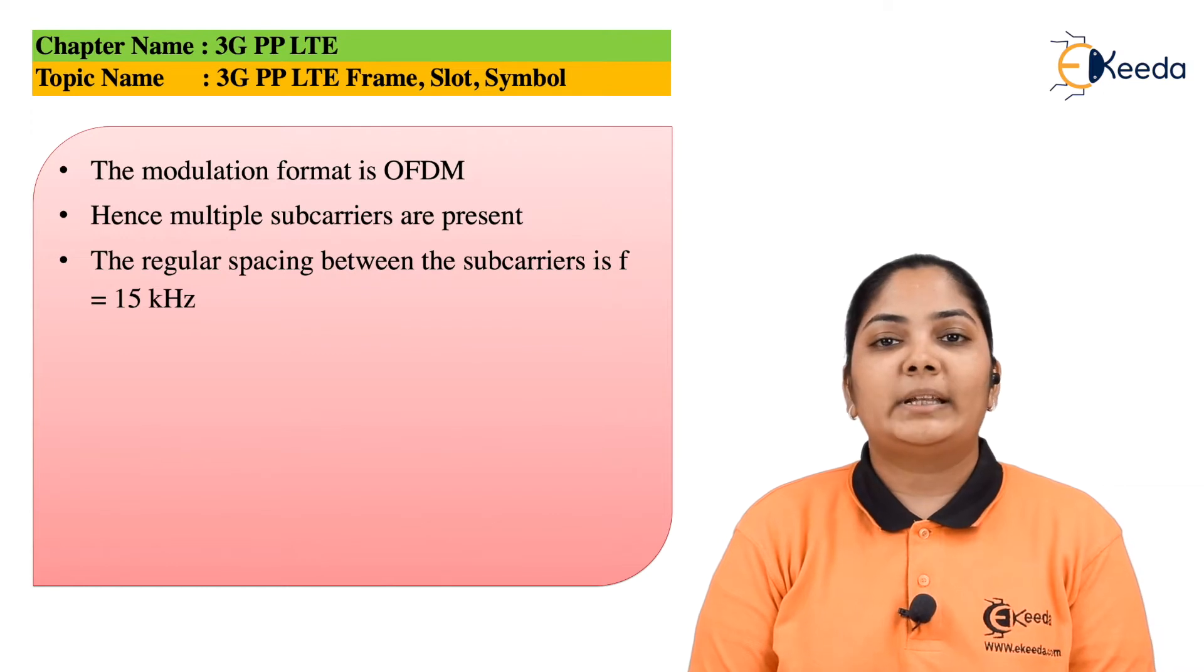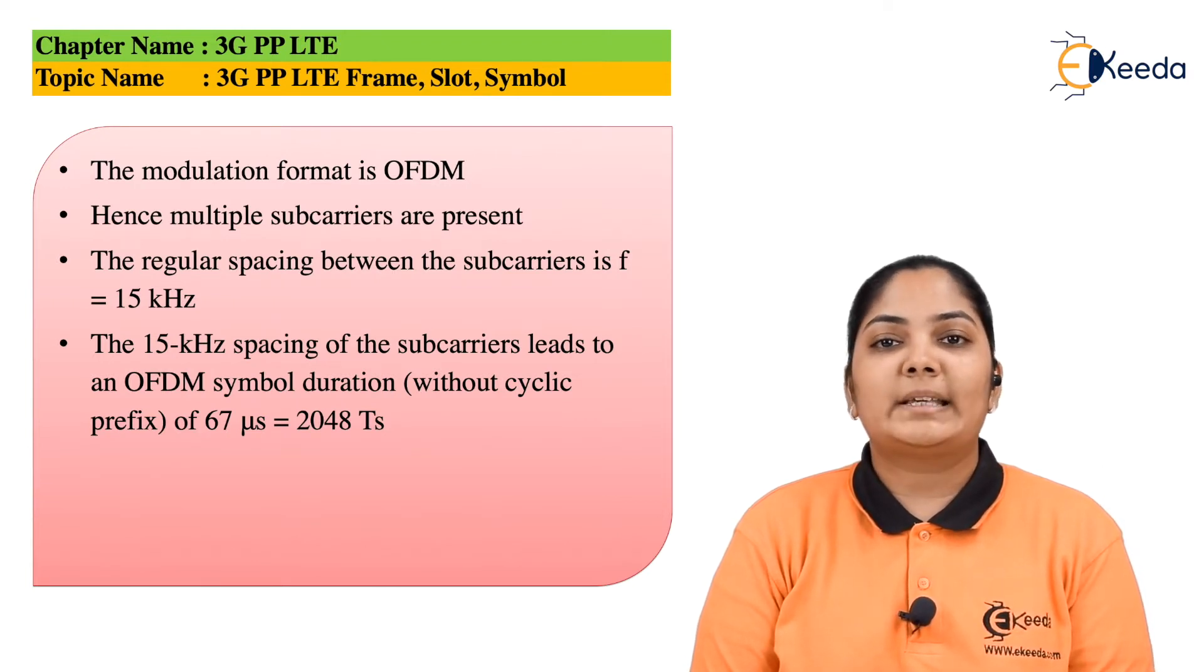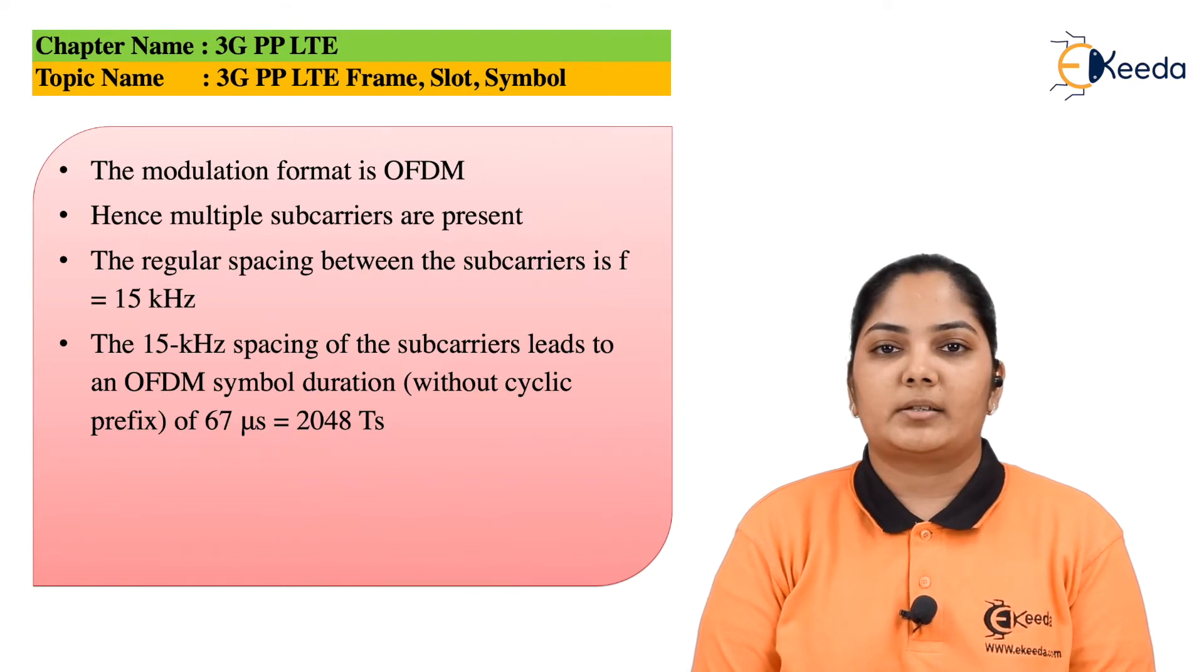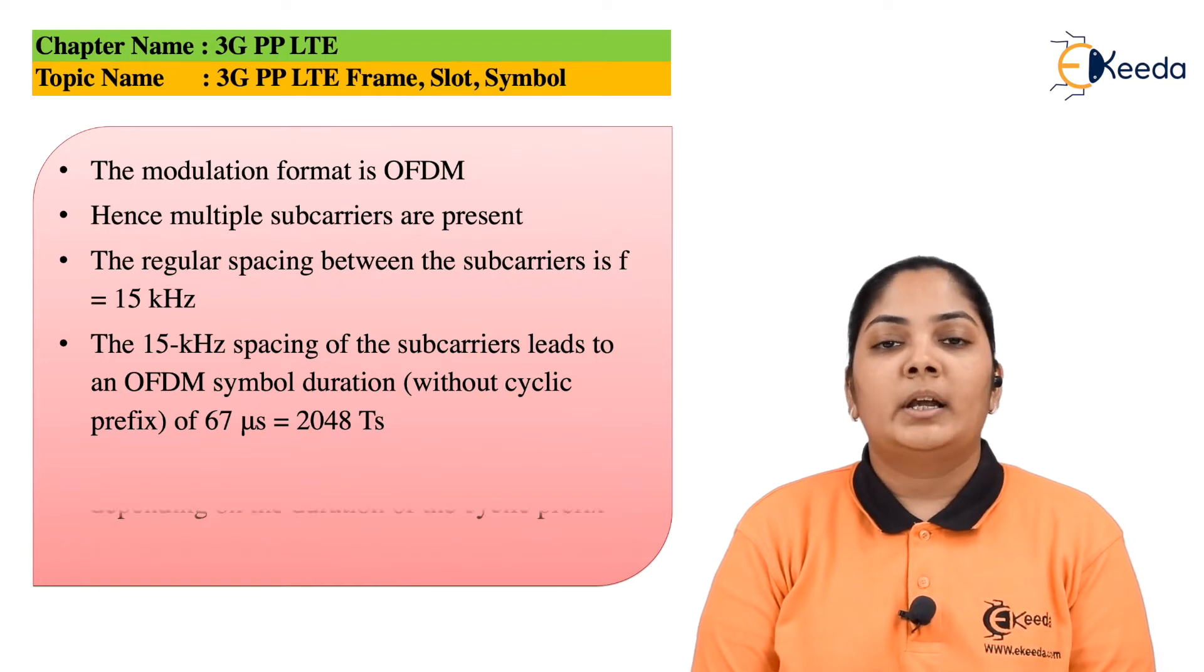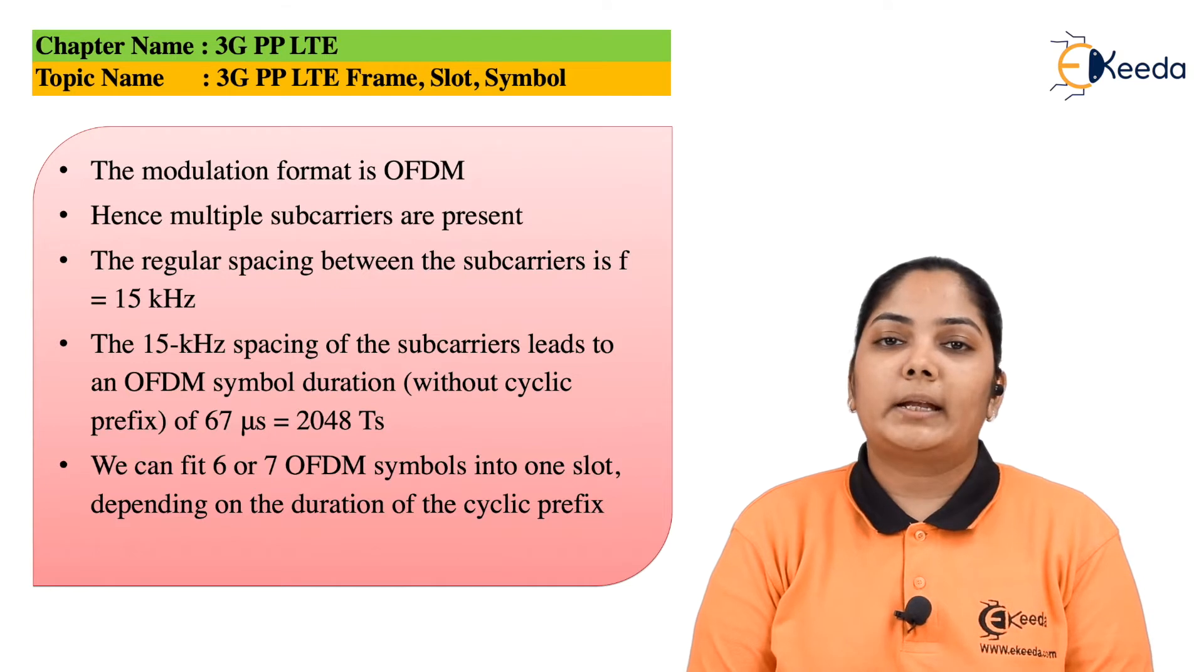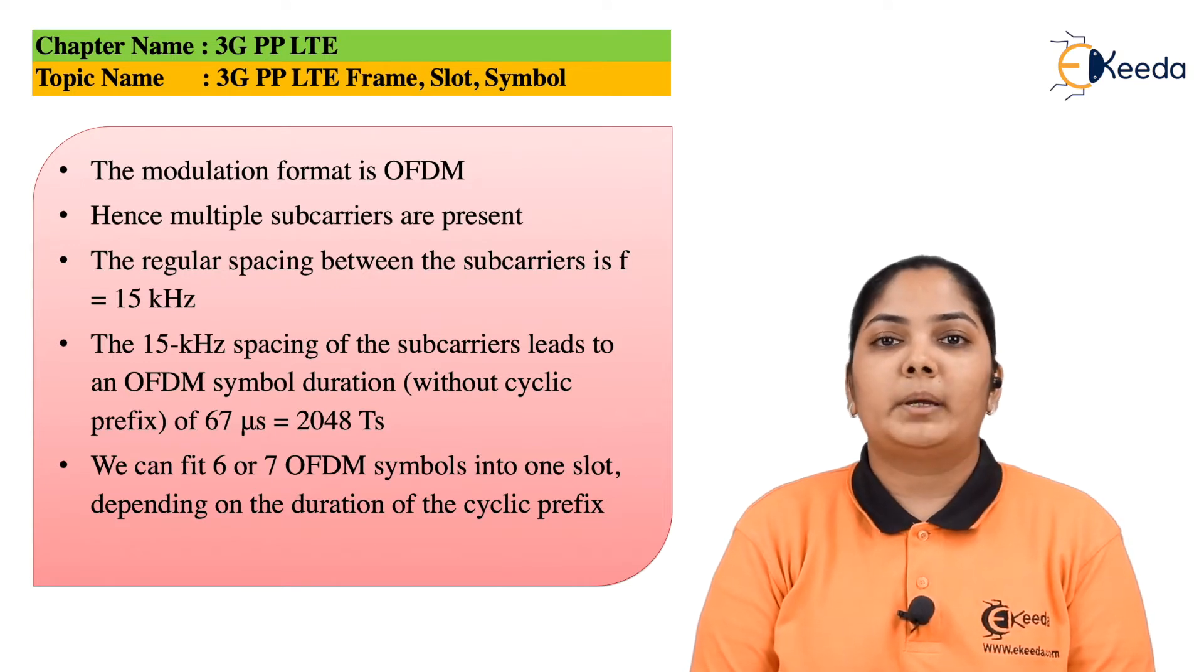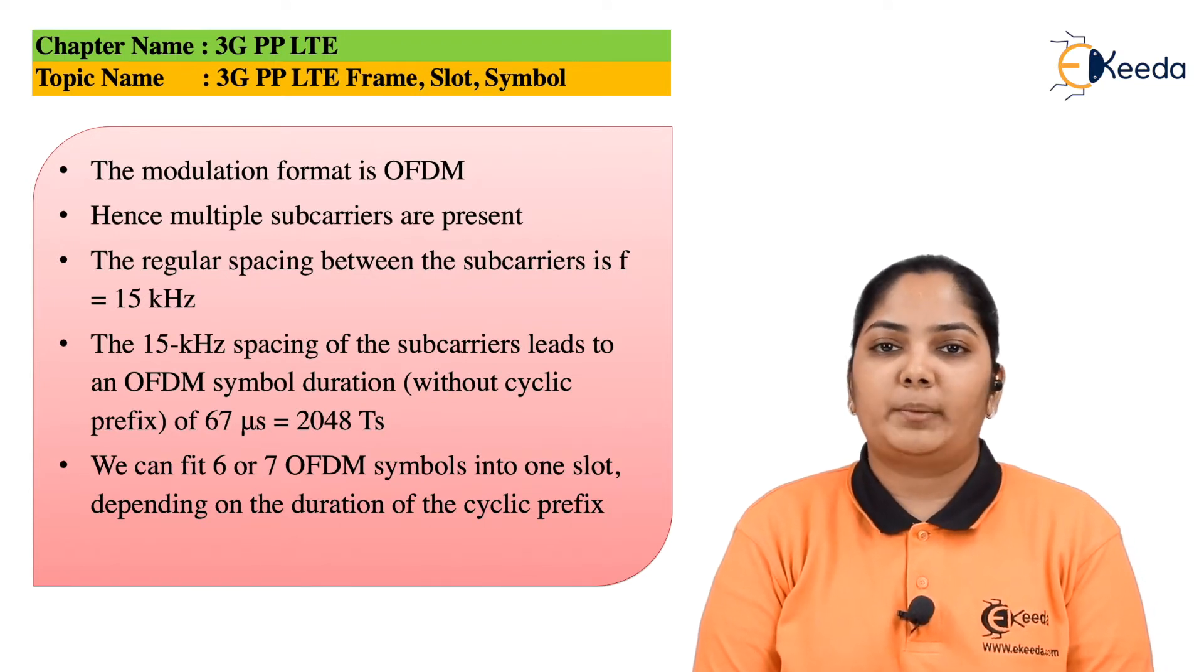The spacing between these subcarriers is 15 kHz. This 15 kHz spacing leads to an OFDM symbol duration of 67 microseconds. Hence, we can fit either 6 or 7 symbols in this one slot. Depending on the duration of the cyclic prefix, if the cyclic prefix is shorter, then maybe 7 symbols we can fit. If the cyclic prefix is longer, then less symbols, that is 5 or 6 can be fit.